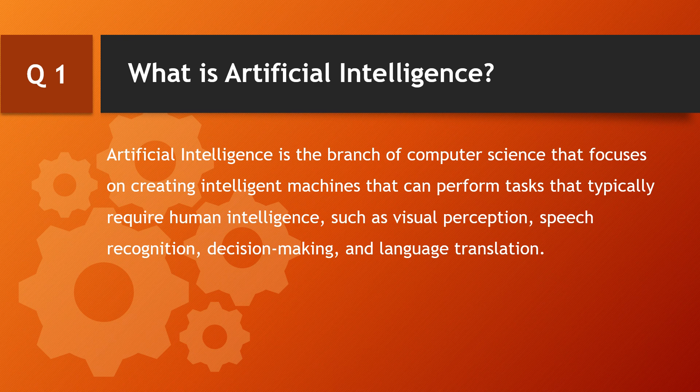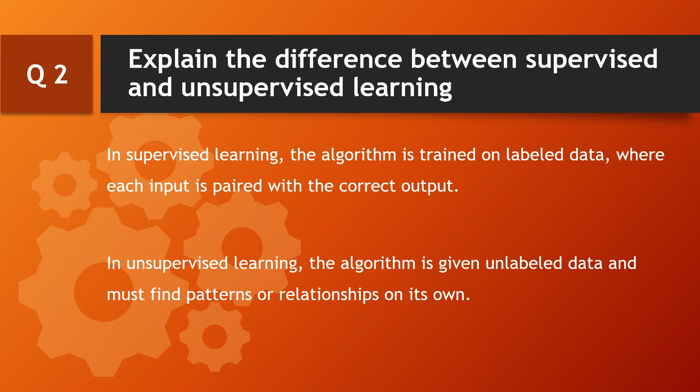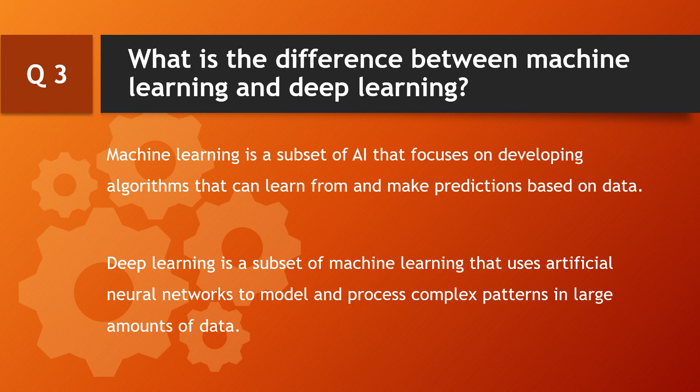Such as visual perception, speech recognition, decision making, and language translation. Second question: explain the difference between supervised and unsupervised learning. In supervised learning, the algorithm is trained on labeled data where each input is paired with the correct output. In unsupervised learning, the algorithm is given unlabeled data and must find patterns or relations on its own.